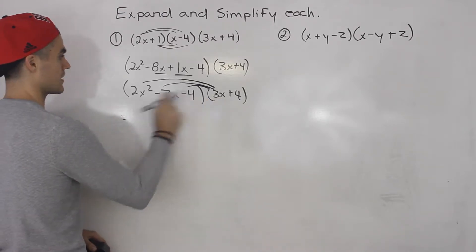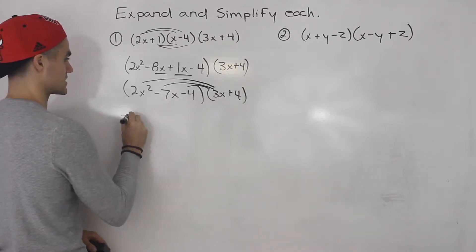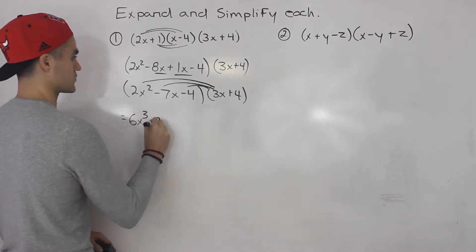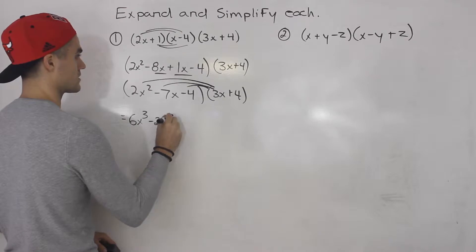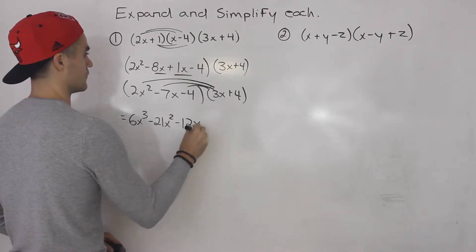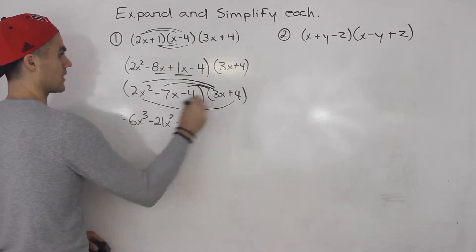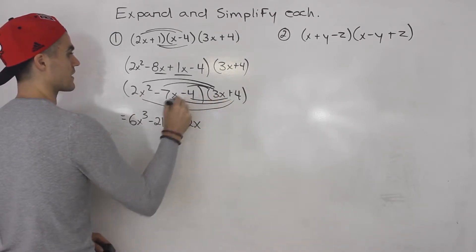So this would give us 3x times 2x squared would give us 6x cubed. This would be minus 21x squared. This would be minus 12x. And same thing with the 4, we would multiply it by all four terms in that first bracket.